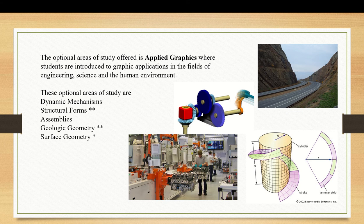Looking at the world that surrounds us in applied graphics, there are five areas that we look at: dynamic mechanisms, structural forms, assemblies, geological geometry and surface geometry.